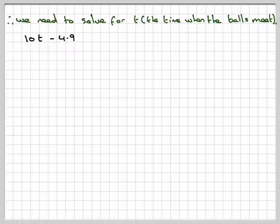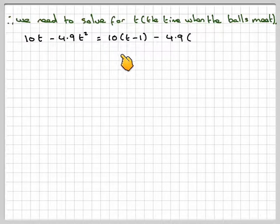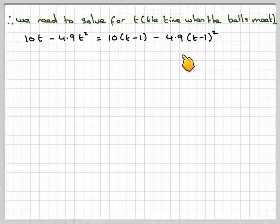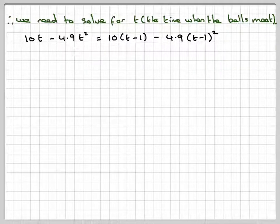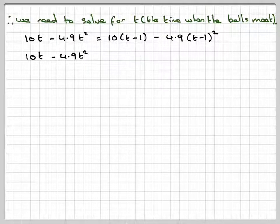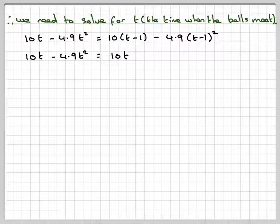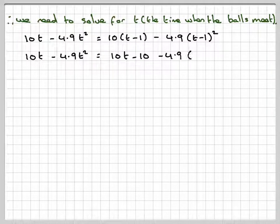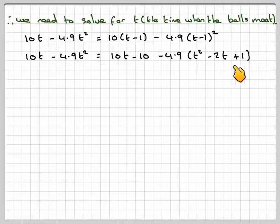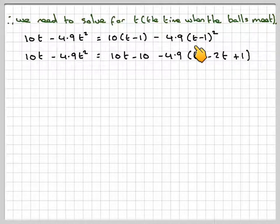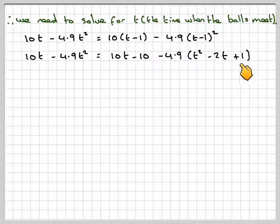10T minus 4.9T squared equals 10 times (T minus 1) minus 4.9(T minus 1) squared. Now, the 4.9 comes from doing that minus half times 9.8. Expanding this side, we're going to get 10T minus 10 minus 4.9, and now we expand this. (T minus 1) all squared is T squared minus 2T plus 1. Being able to expand a quadratic is quite important.